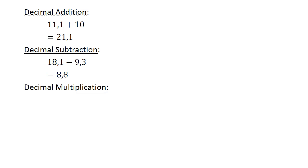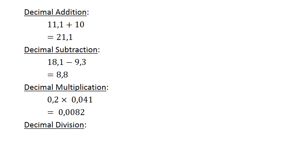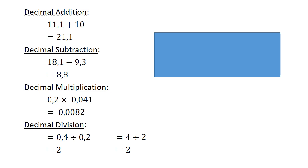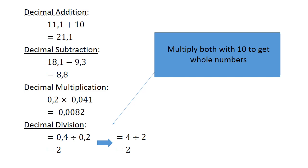Decimal multiplication: 0.2 times 0.041 equals 0.0082. Decimal division: 0.4 divided by 0.2 equals 2. Multiply both by 10 to get whole numbers and then divide.